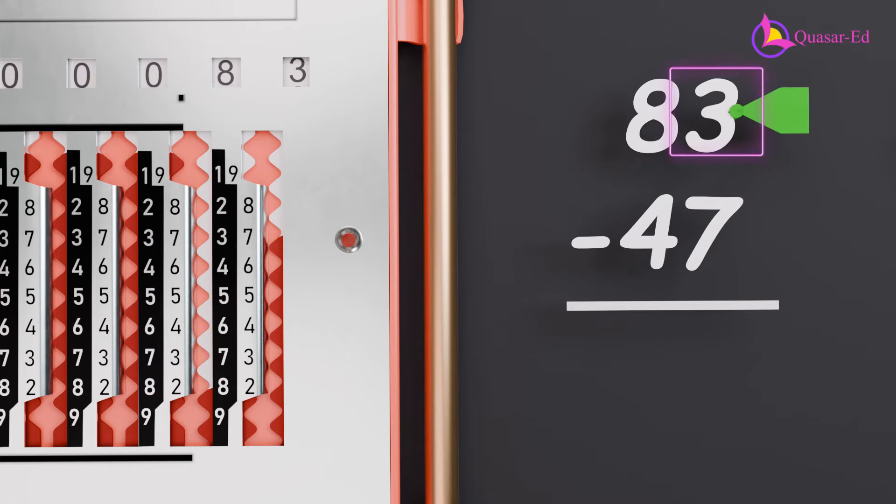We need to subtract 7 from 3. Since 7 is greater than 3, we will need to borrow. Pulling down 7 on the slider for the digit 3 will cause the red section to move all the way down, move to the left side, and pull up one unit on the slider. This changes the neighboring column 8 to decrease by 1, changing it to 7.